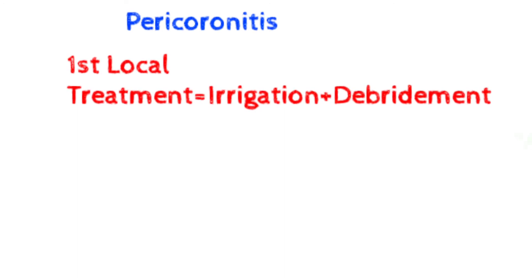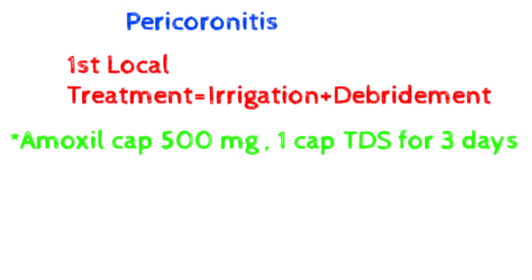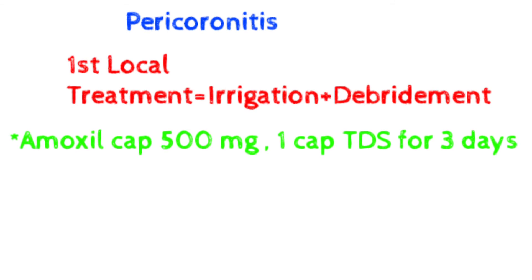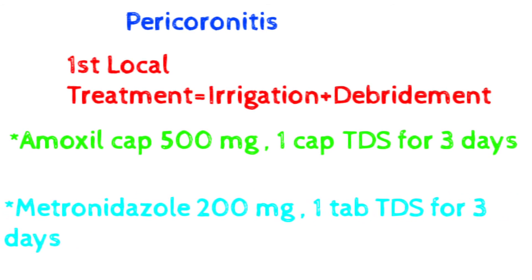If a patient has no systemic sign like fever, we stay with local treatment. If a patient has a systemic sign, then we go for drugs. For pericuronitis, we give amoxil and metronidazole. Amoxil capsule 500 mg, one capsule at one time, TDS — three times a day — for three days. Metronidazole 200 mg, one tablet TDS for three days. Both antibiotics are given for three days, both TDS.